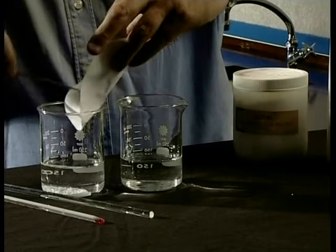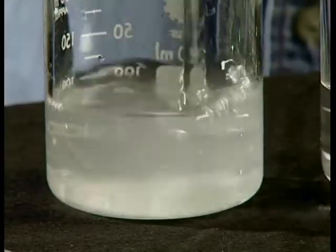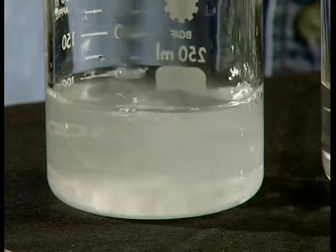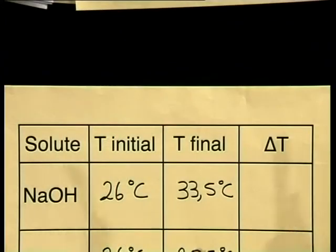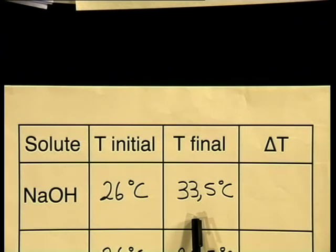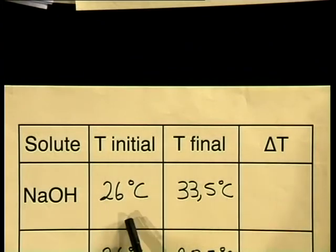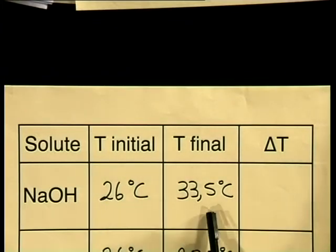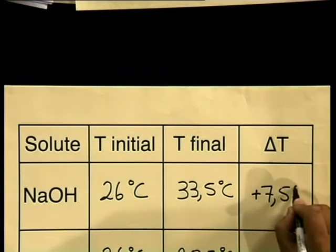Now I will add the sodium hydroxide to the beaker, and stir with the glass rod until all the solute has dissolved. Let's check the temperature now and record it. The final temperature is 33.5 degrees Celsius. We can now calculate the change in temperature by subtracting the initial temperature from the final temperature. The change in temperature is plus 7.5 degrees Celsius.